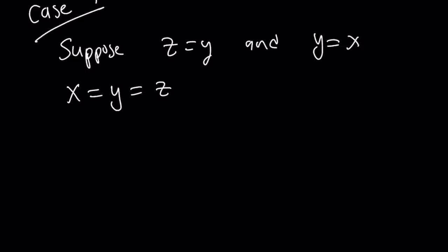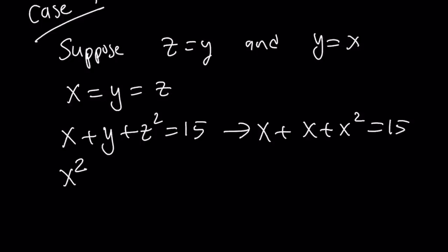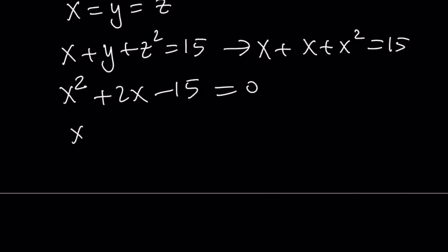Consider the first equation, for example. We can just go ahead and replace everything with x. And then we get a quadratic equation, which is x squared plus 2x minus 15 equals zero. And we can factor this easily. x minus 3 times x plus 5 equals zero.